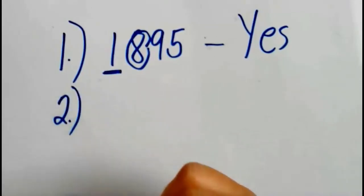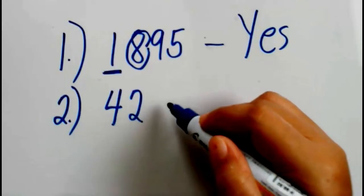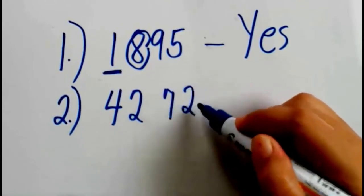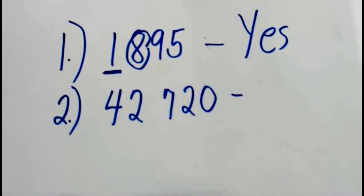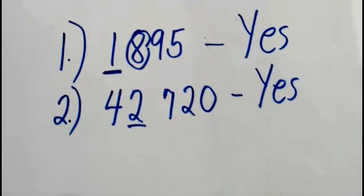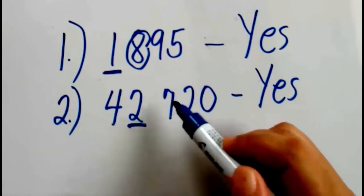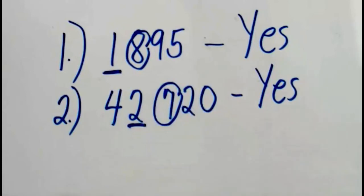Next, number 2. The number is 42,720, and the underlined digit here is 2. Are we going to round this number up or no? You are correct — very good. The answer is yes, we are going to round this number up, because the number that we're going to round off is 2, and 2 is followed by 7.